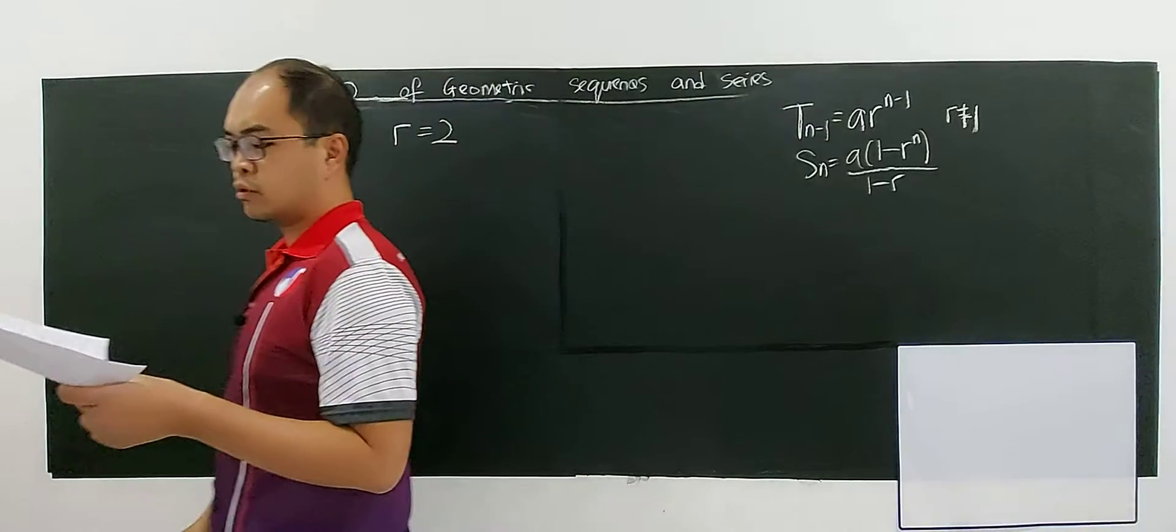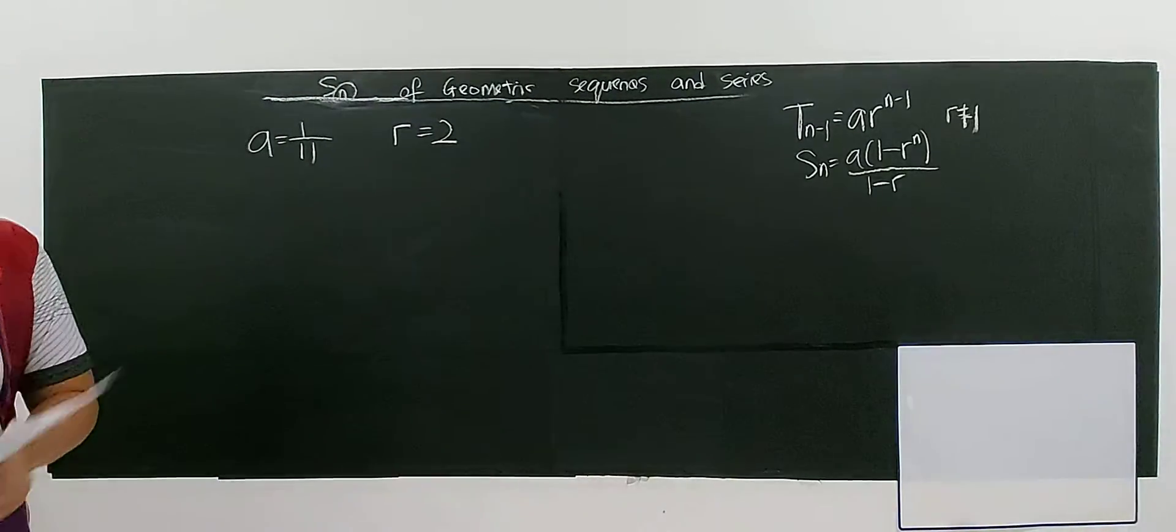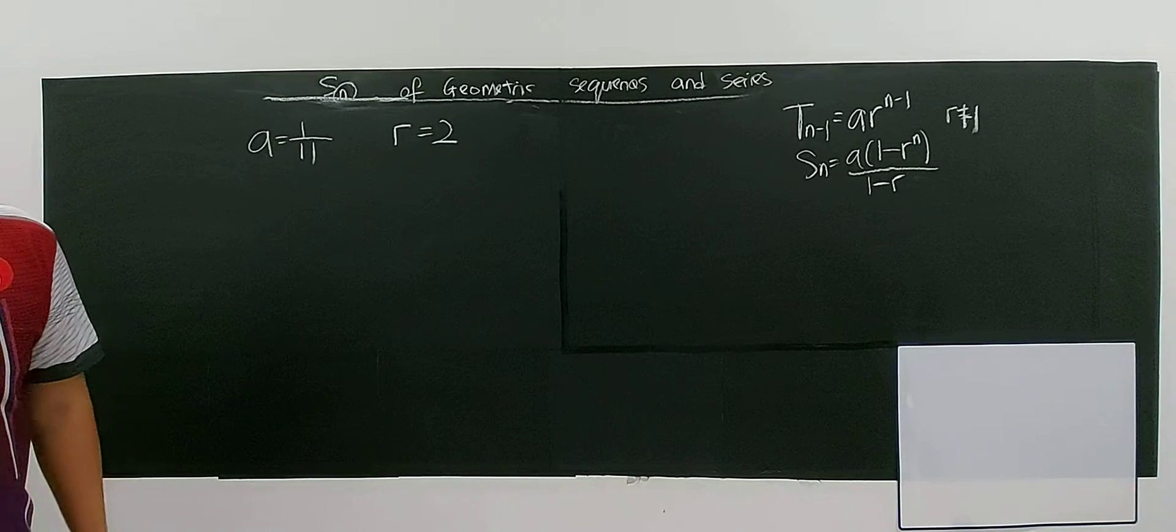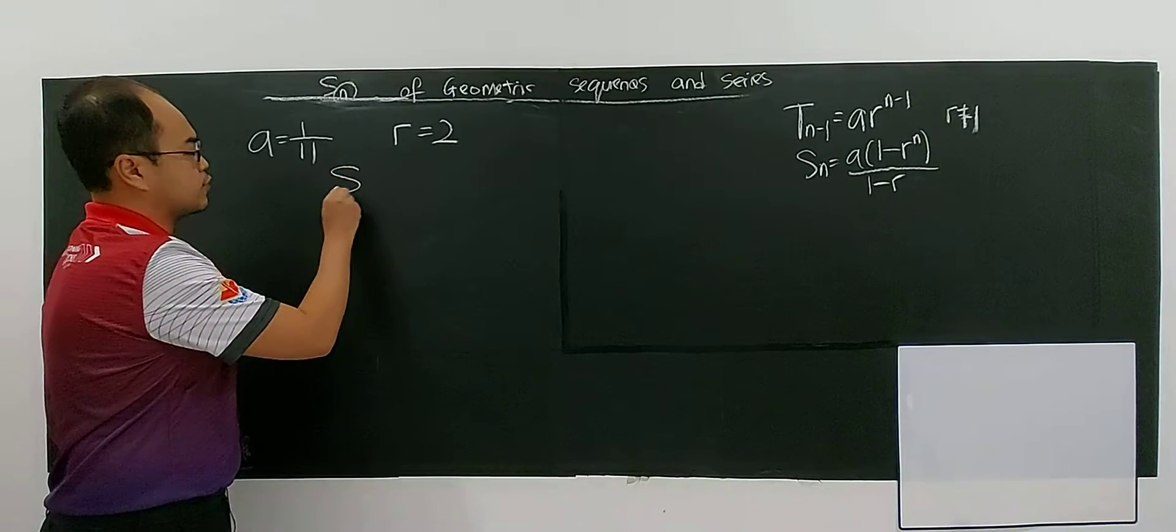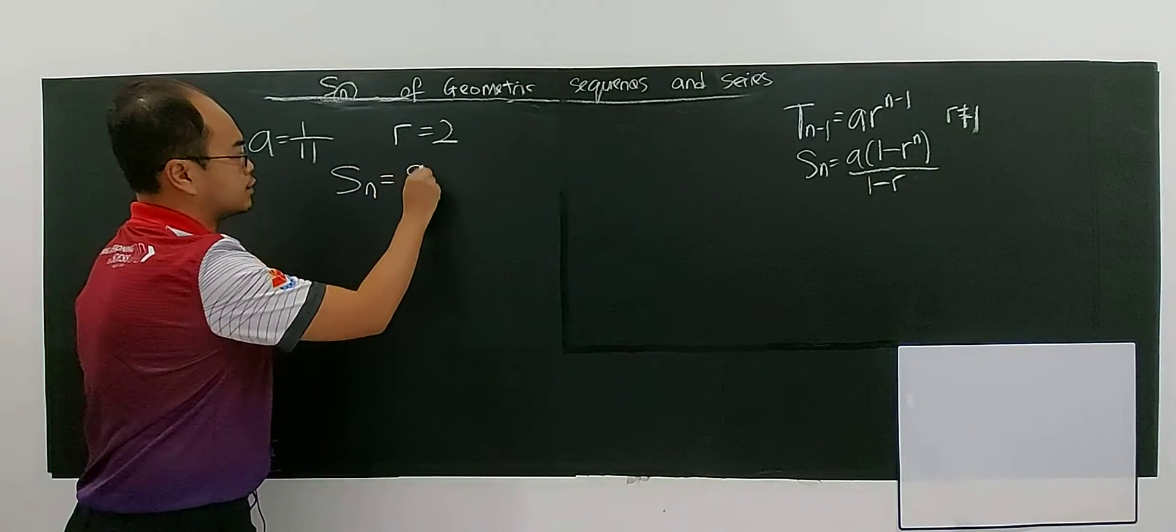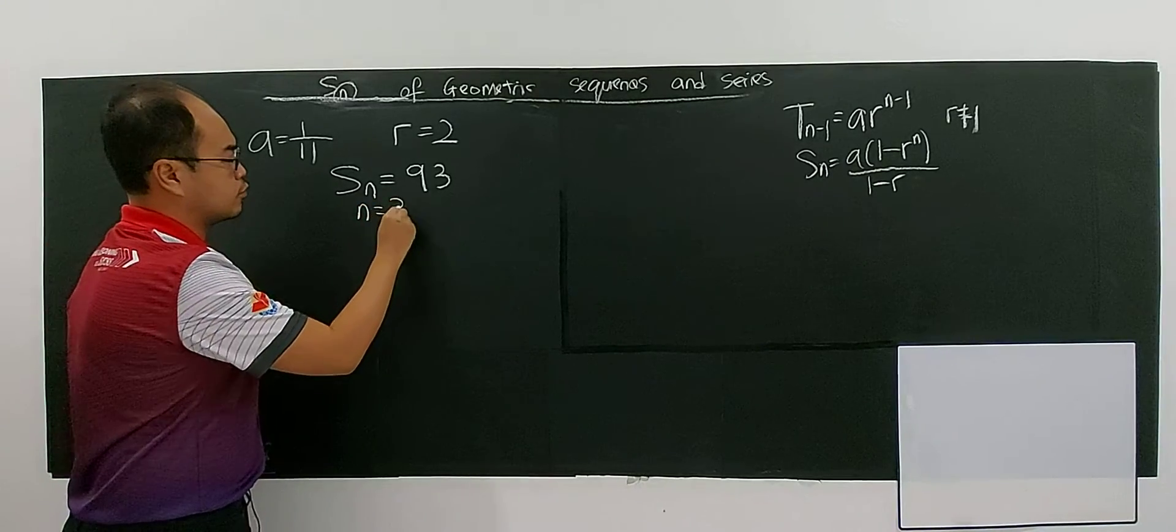So a equals 1 over 11, and common ratio is 2. Given that the sum of the first N term is 93, the question just said, given that the sum of the first N term is 93, so then they require you to find the value of N.